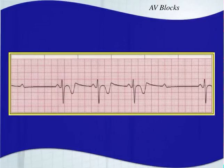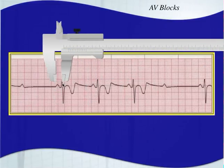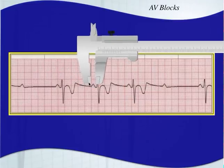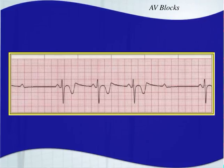Looking at the next strip: is our PR interval consistent? Yes — we have a consistent PR interval for those beats. Do we have dropped beats? Yes — there are P waves without a QRS complex. So this is a Mobitz 2, a second degree type 2 AV block.